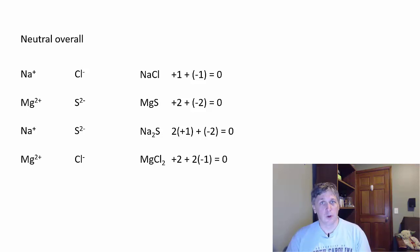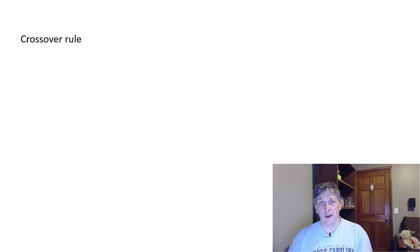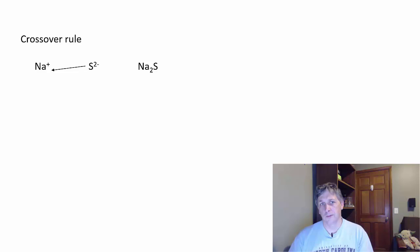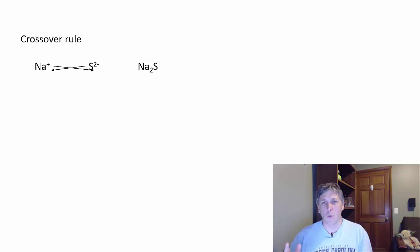When figuring out ratios for ionic compounds, there's a quick method called the crossover method. Whatever the charge of the anion is becomes the subscript of the cation, and vice versa. For sodium and sulfur: sulfur has a negative two charge, so two becomes the subscript for sodium. The charge of sodium — plus one — becomes the subscript for sulfur, but we don't write ones. Same thing for magnesium chloride: two goes in front of chlorine.